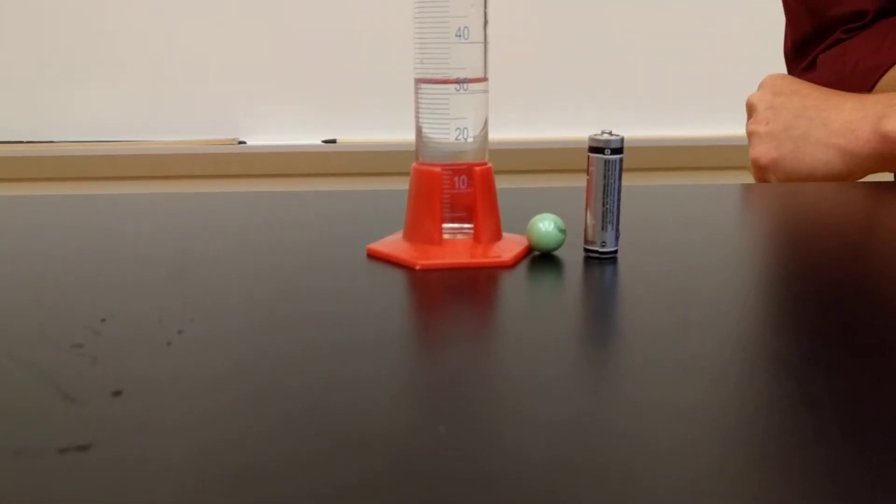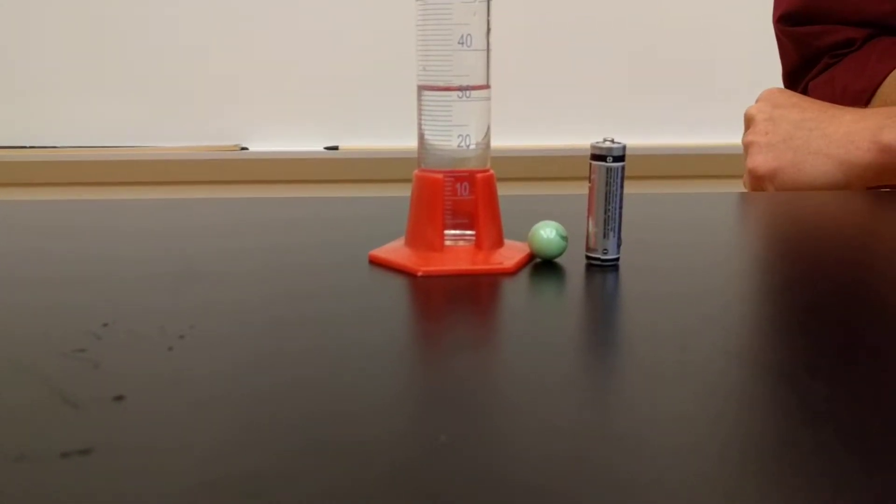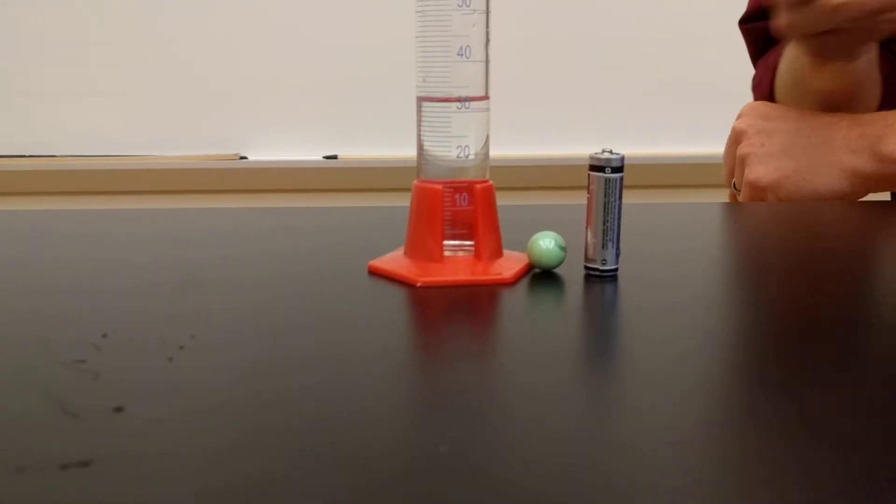When you're finding the volume of irregular shaped objects, you can't just use a ruler. You actually have to use displacement.